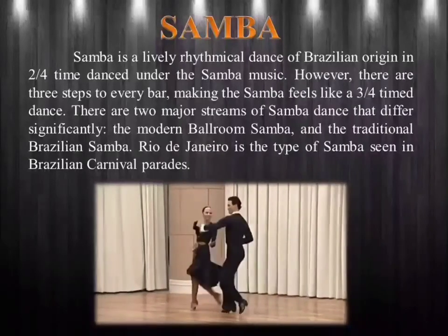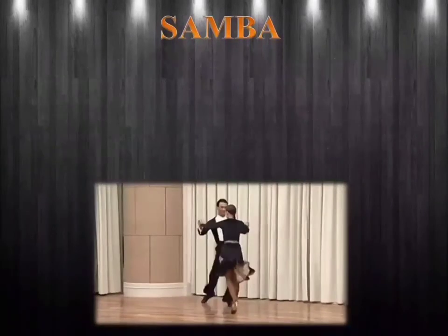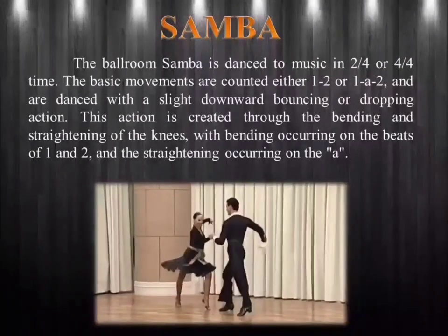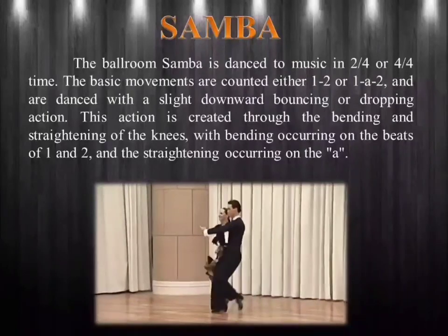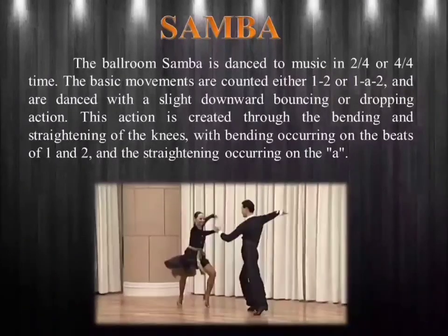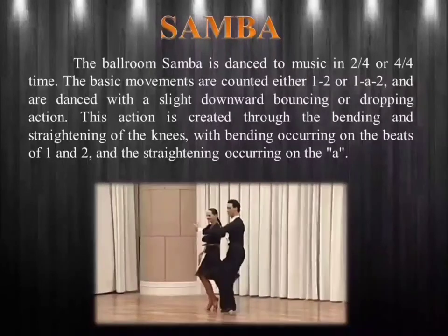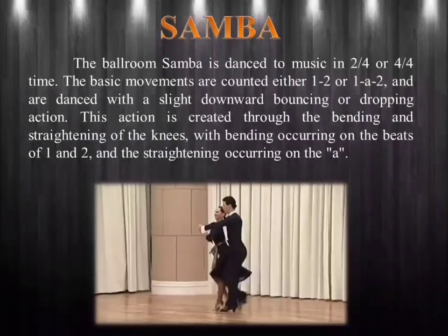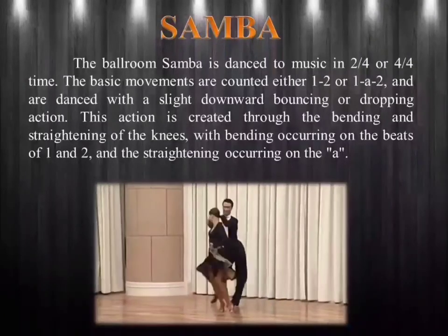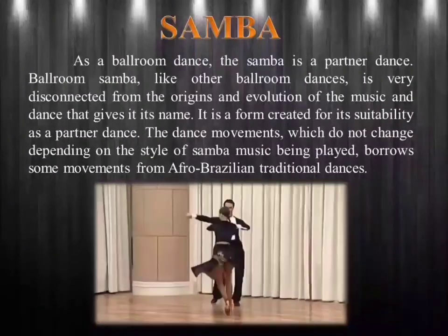Rio de Janeiro is the type of samba seen in Brazilian carnival parades. The ballroom samba is danced to music in two-four or four-four time. The basic movements are counted either one-two or one-ah-two, and are danced with a slight downward bouncing or dropping action. This action is created through the bending and straightening of the knees, with bending occurring on the beats of one and two, and the straightening occurring on the ah. As a ballroom dance, the samba is a partner dance.